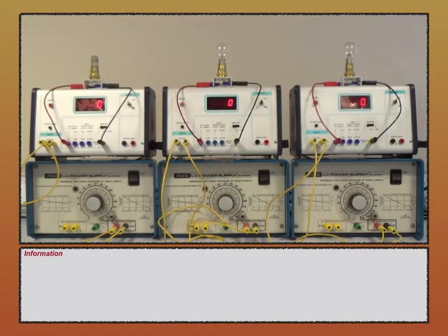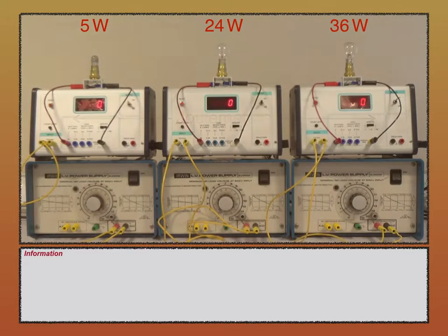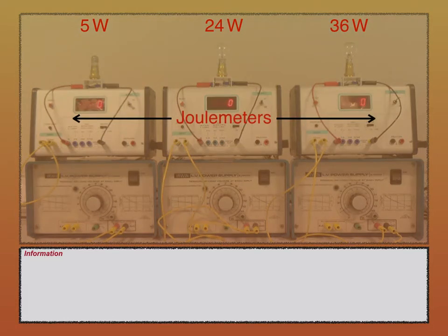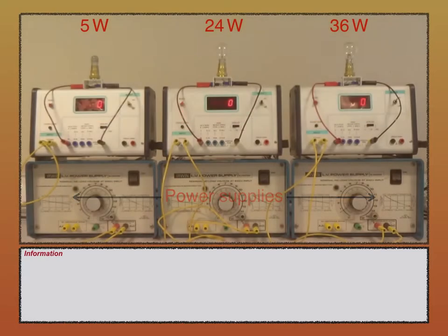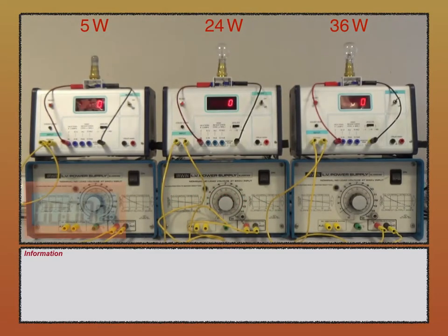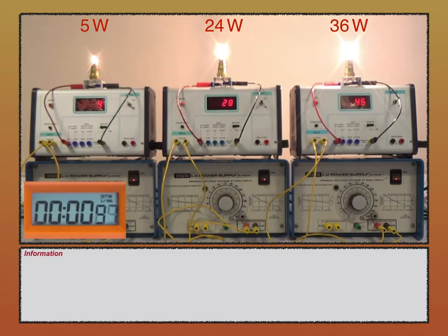I'll be using two experimental setups and this is the first. Here I have three lamps: one with a power rating of 5 watts, the second with 24 watts, and the third 36 watts. Each lamp is connected to a joule meter which measures the energy transferred. Each joule meter is then connected to a power supply which is adjusted so that the voltage across each lamp is 12 volts. I'll switch on all three power supplies now and measure the energy transferred by each lamp in 100 seconds. That's 1 minute 40 seconds.